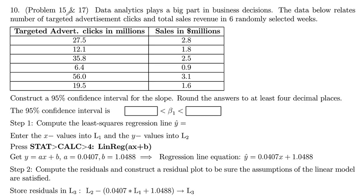Problem 10 here is like problems 15 and 17 on the exam review. We're looking at a data analytics situation where we're making business decisions. The data below relates targeted advertisement clicks and total sales revenue in six randomly selected weeks for a specific company. And then we're seeing how those are correlated.